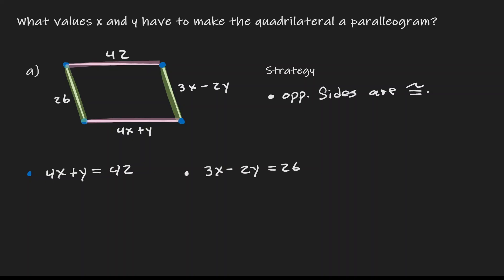At this point we have a system of equations, and now we need to think about algebra. I can see that the variable y is somewhat isolated, so let me isolate y. To isolate it, let me subtract 4x from both sides. Now we have y equals negative 4x plus 42.